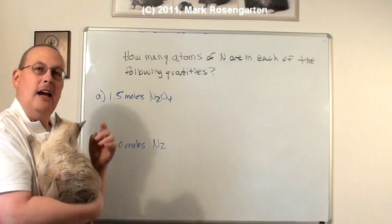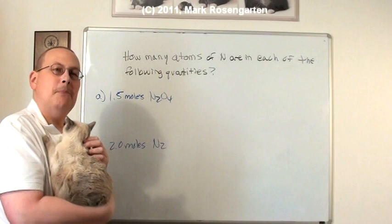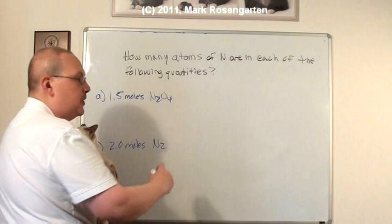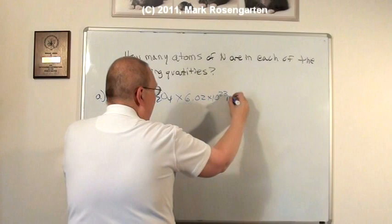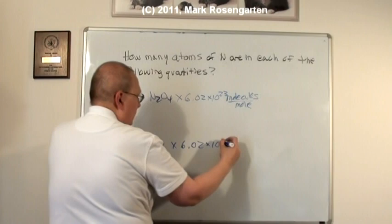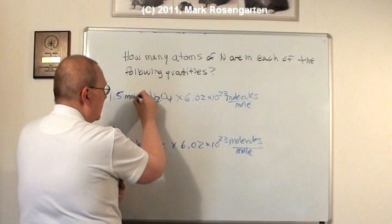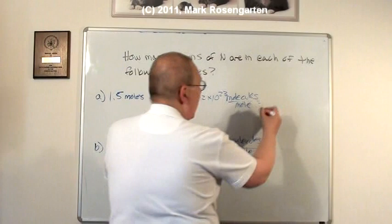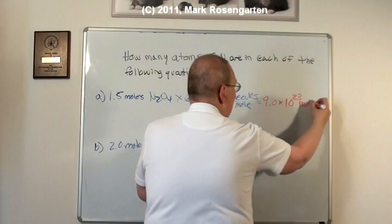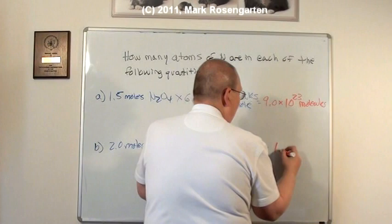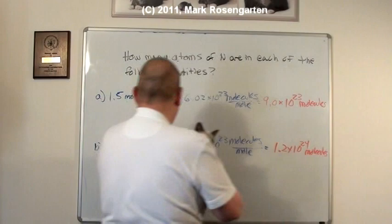In order to convert from moles to molecules, it's necessary to multiply by the number of molecules in a mole. This is Avogadro's number, 6.02 times 10 to the 23rd molecules per mole. Now what happens here is that moles cancel and will leave us with molecules. This gives us 9.0 times 10 to the 23rd molecules of N2O4 and 1.2 times 10 to the 24th molecules of N2.